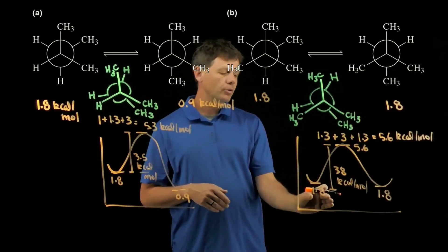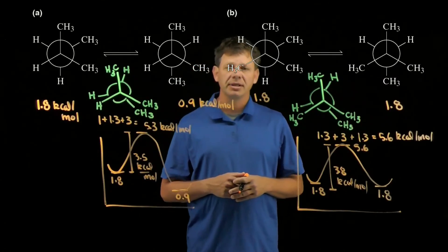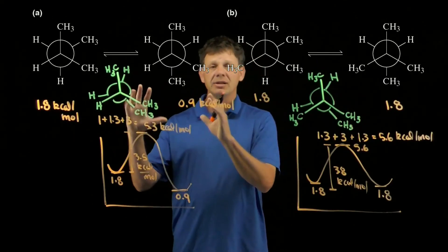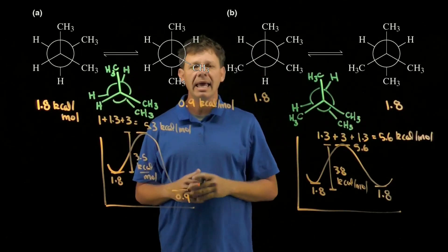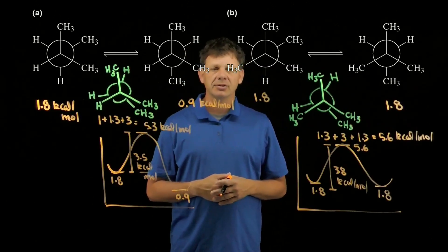Over here to go from reactant to product has an activation energy of 3.5 kilocalories. To go from reactant to product over here is 3.8 kilocalories. The lower activation energy is the faster reaction. So the reaction illustrated in A has the lower activation energy and would therefore be the faster reaction.